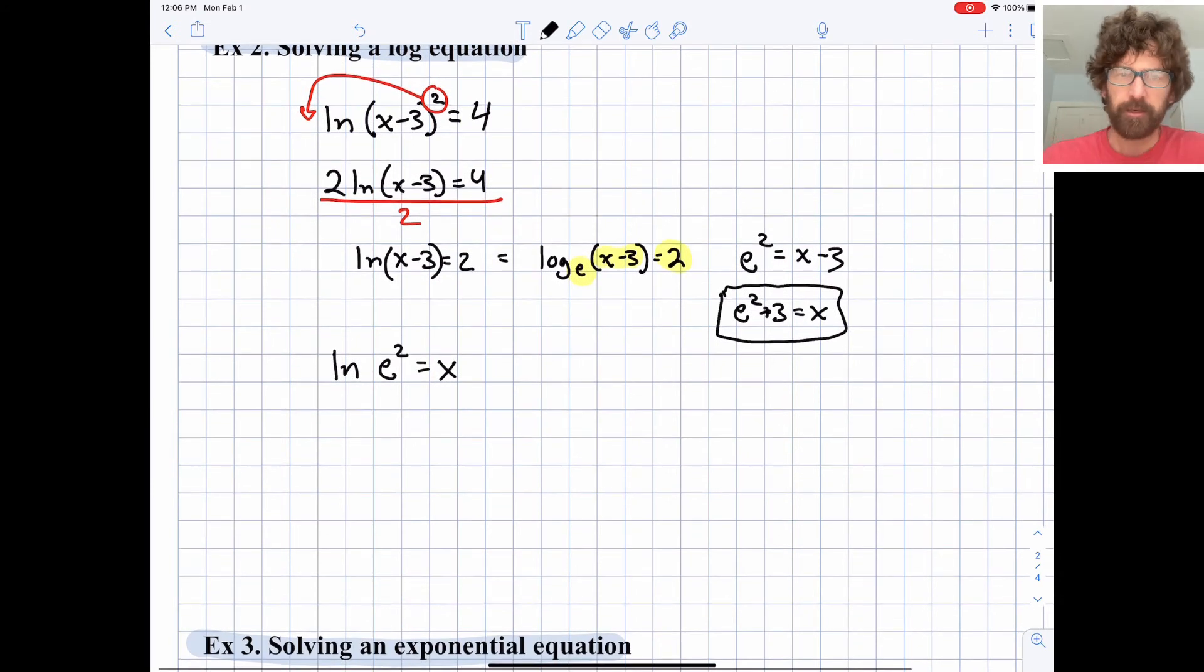Next one, natural log of e squared is x. And there are a couple ways of thinking about this. But remember what a logarithm means. A logarithm is asking us what power the base needs to be raised to to get what we're taking the log of.